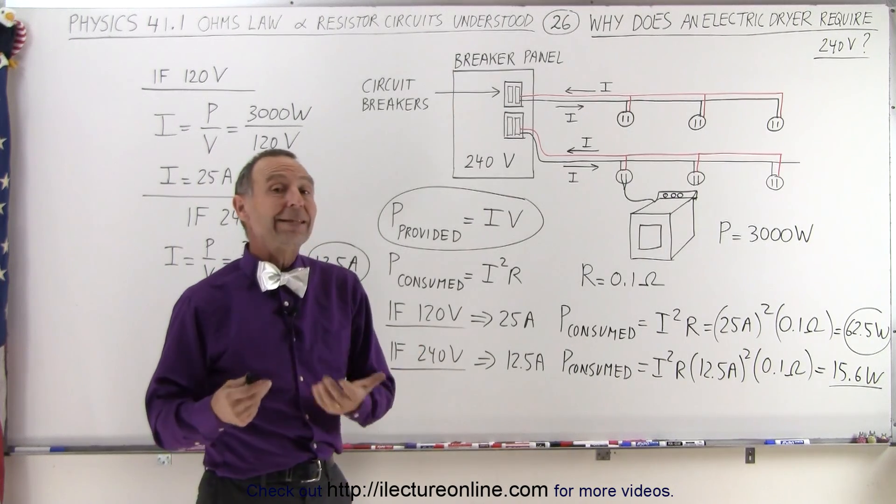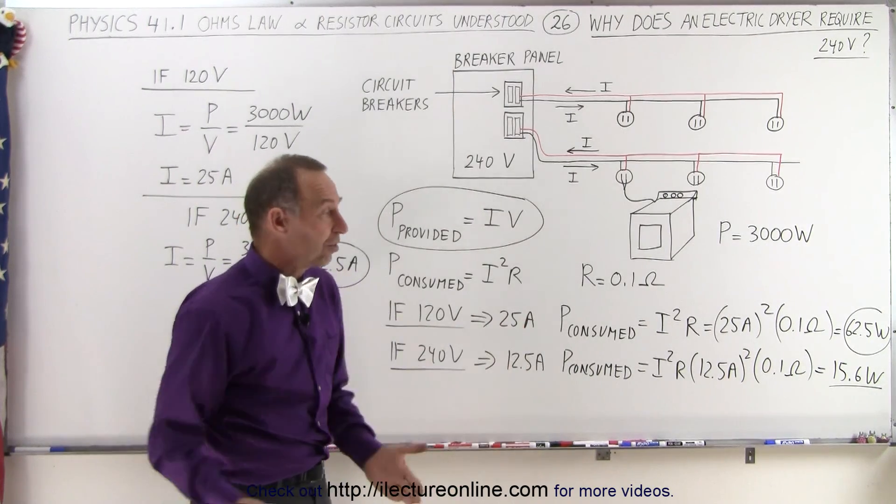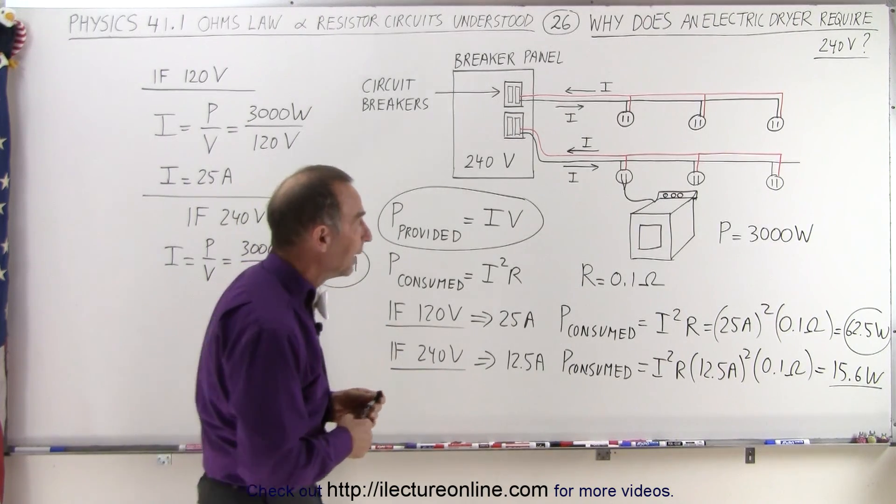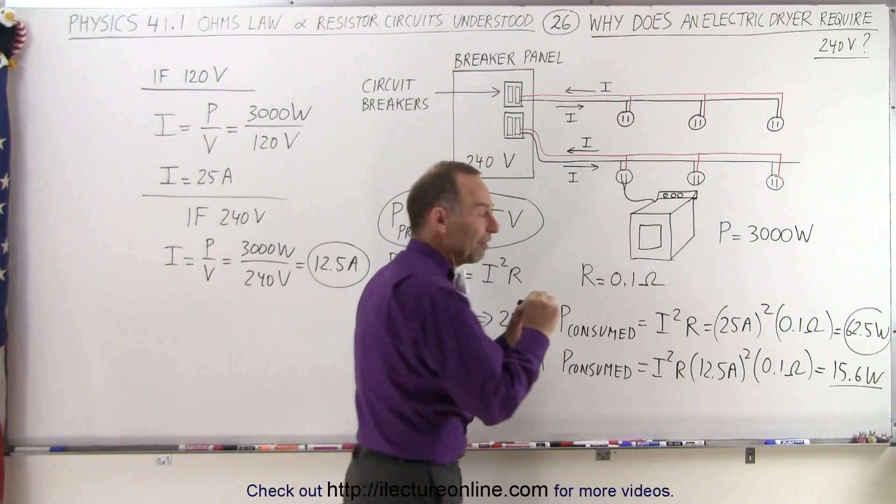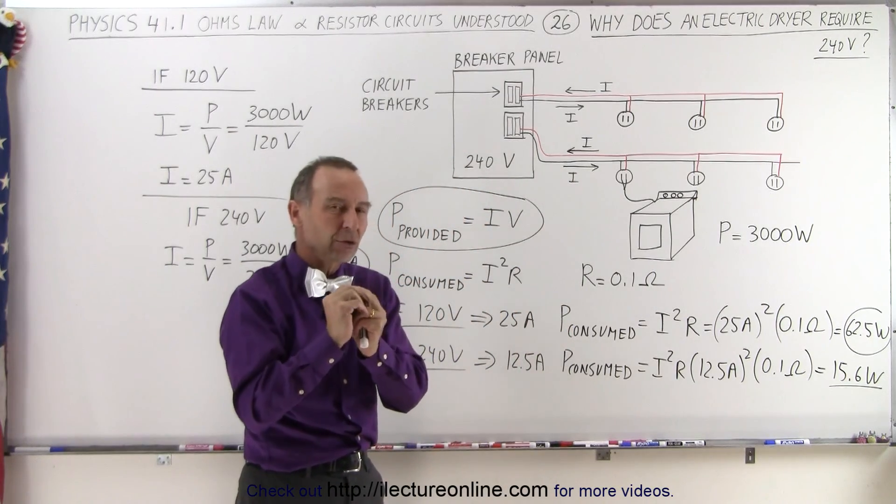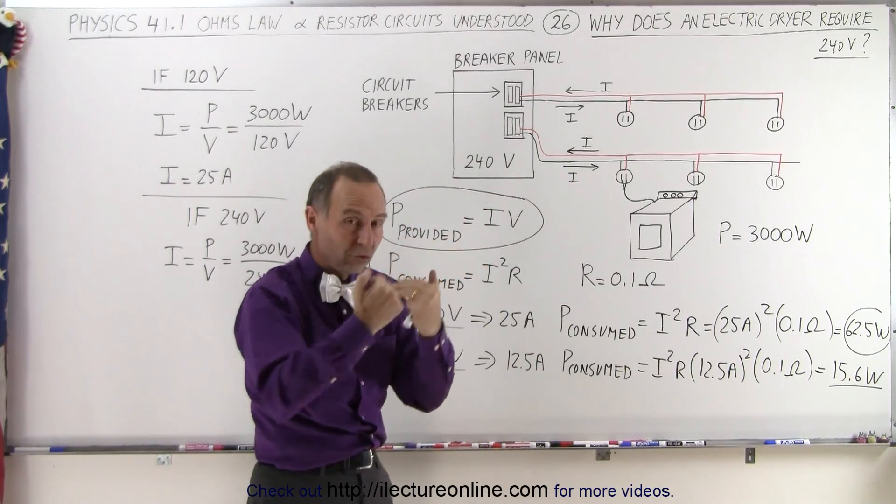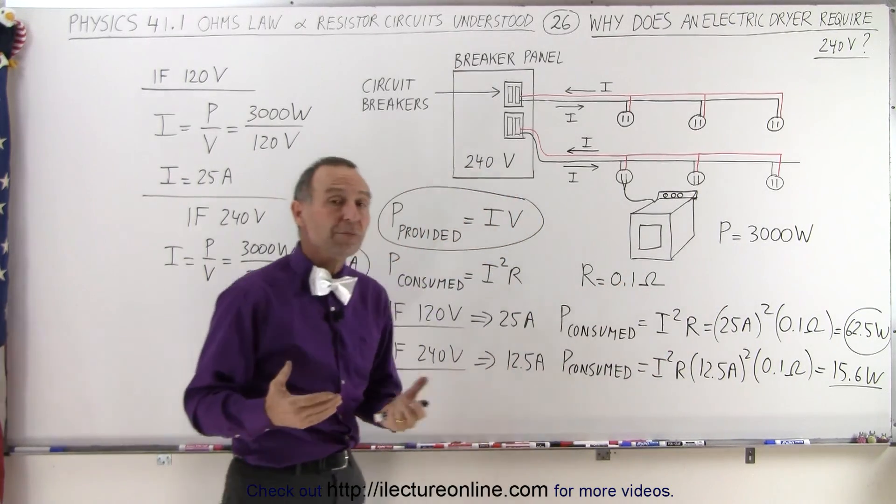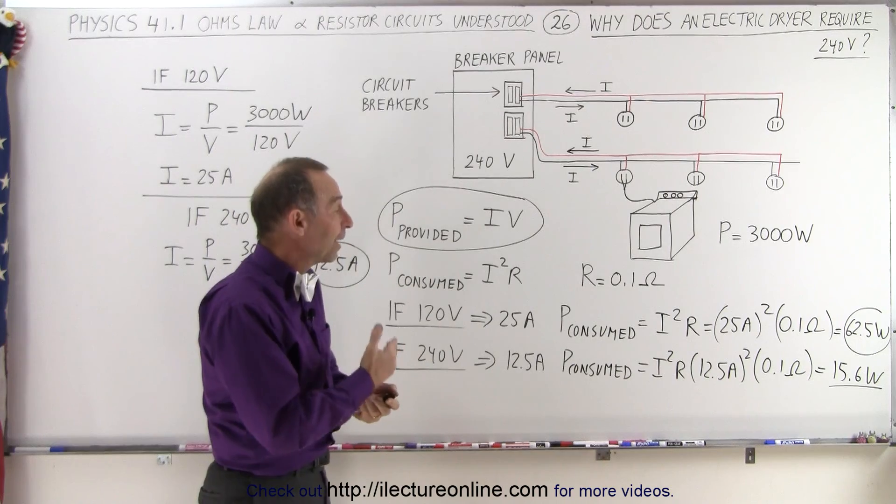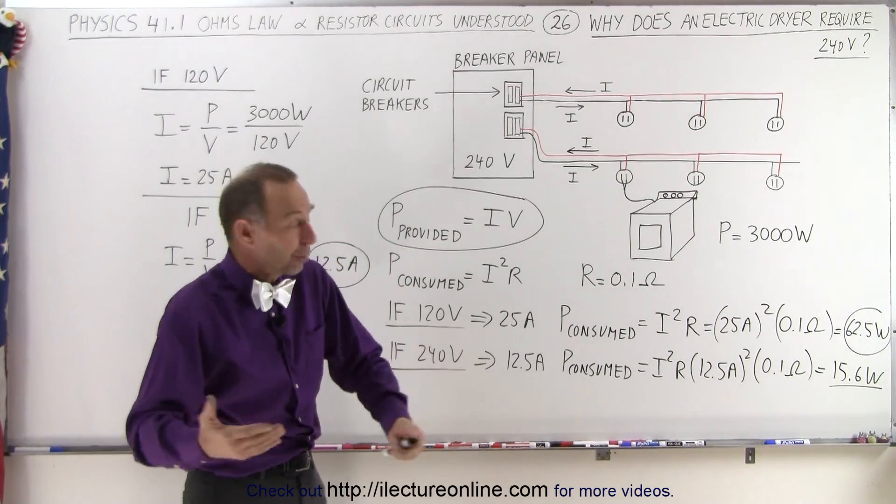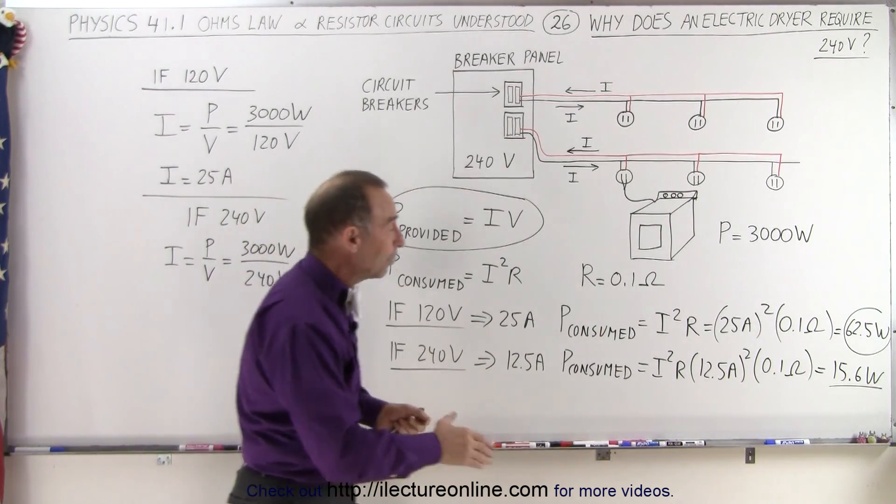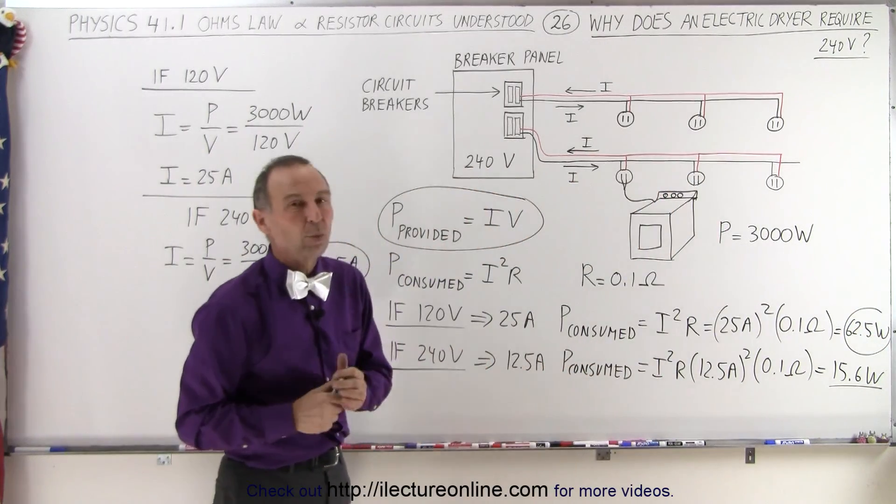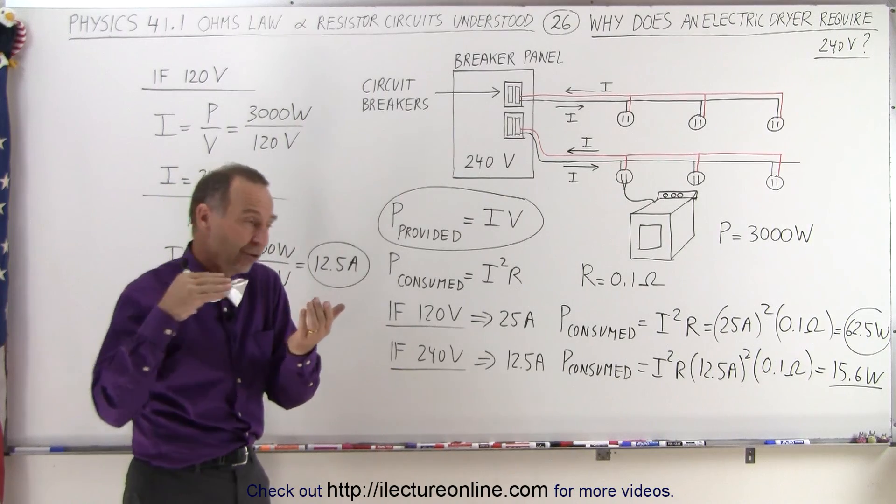Another thing that they do when you have big appliances like electric stoves or electric dryers hooked up to a circuit: they will actually use wires that have a much bigger gauge, a much bigger cross-sectional area, reducing the resistance. So instead of maybe having a wire that for a certain length is 0.1 ohms, it may only be half of that - 0.05, or maybe even 0.02 or something like that - again reducing the power consumption of the wires so they don't get nearly as warm.